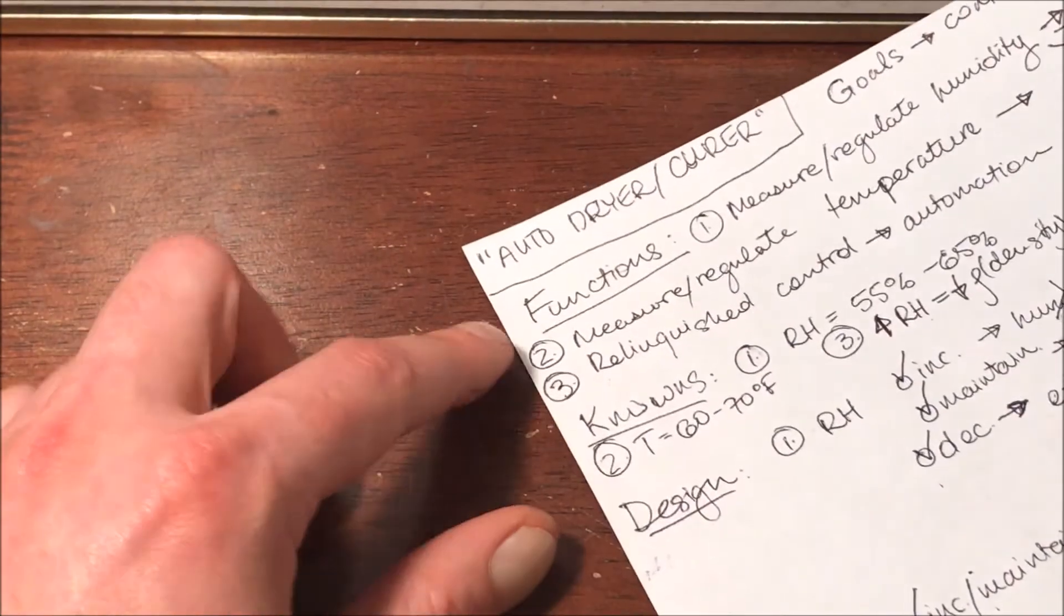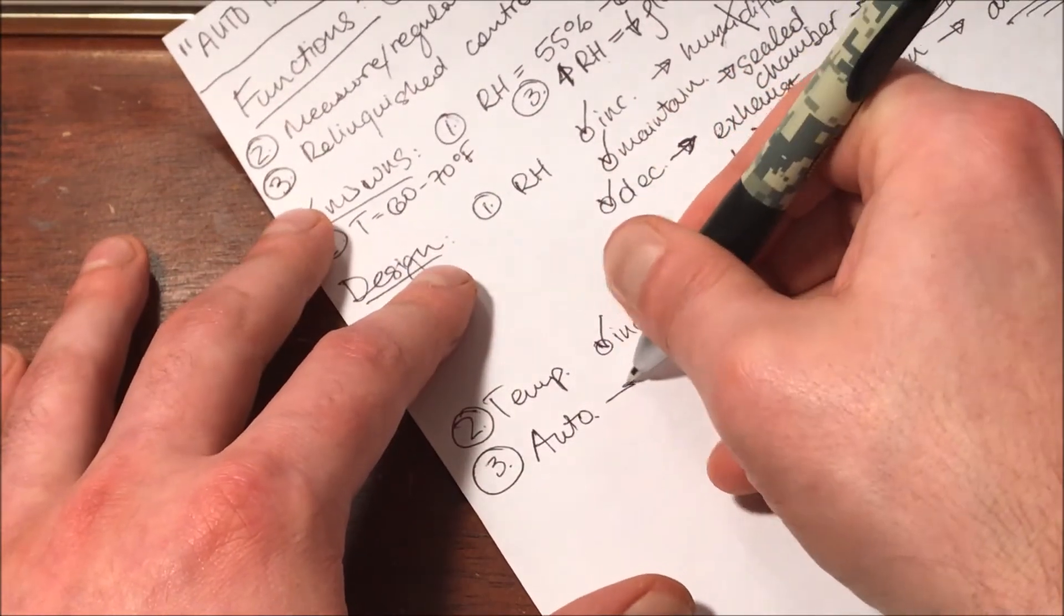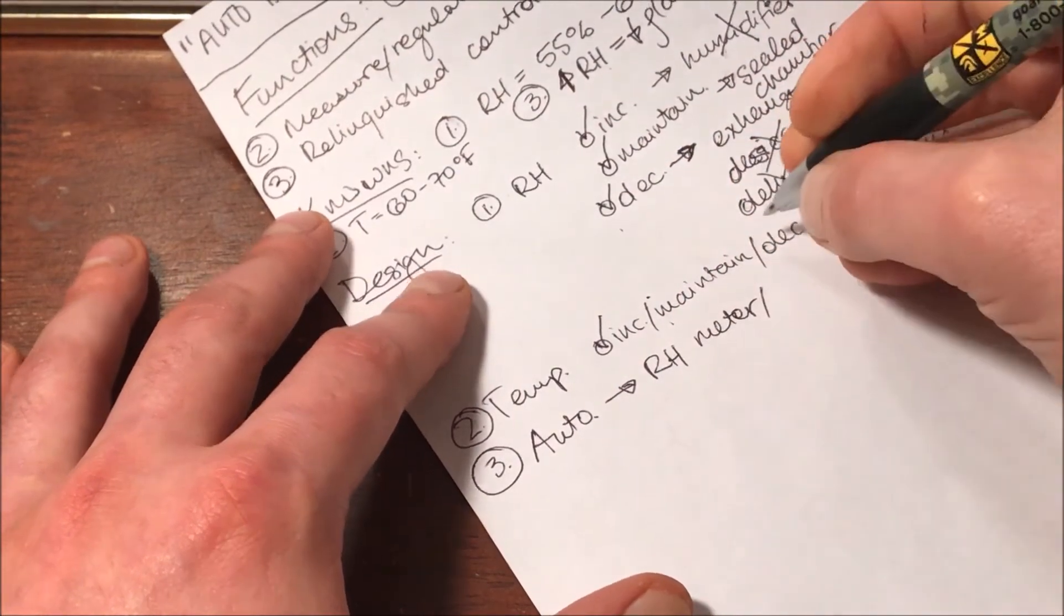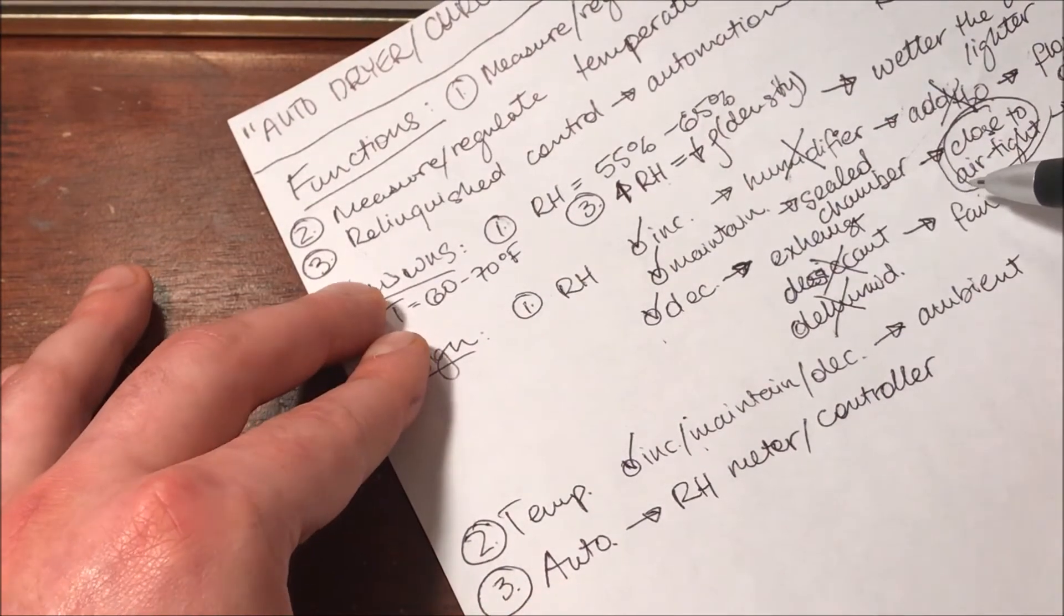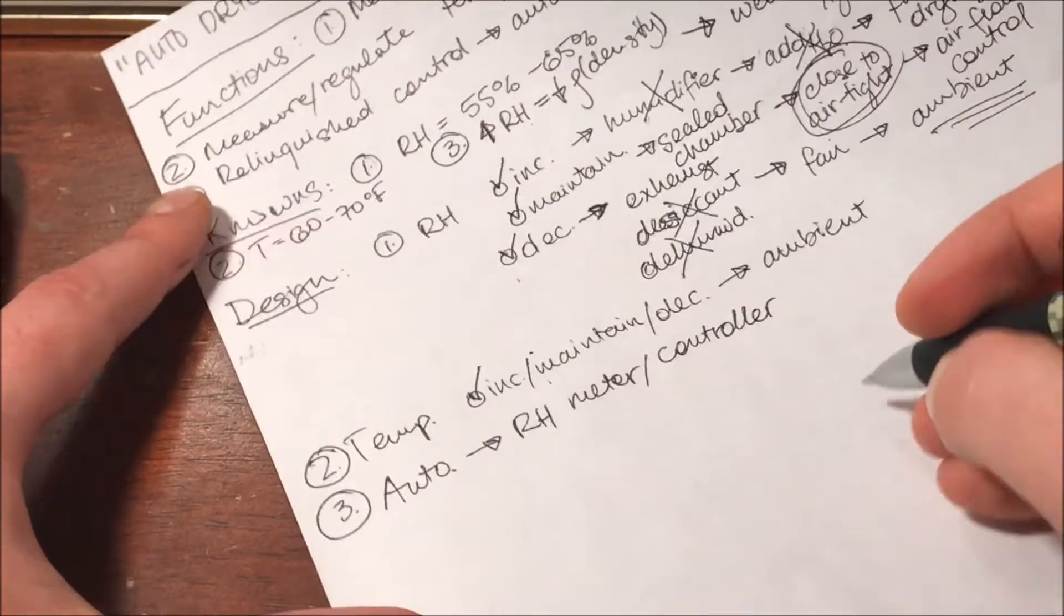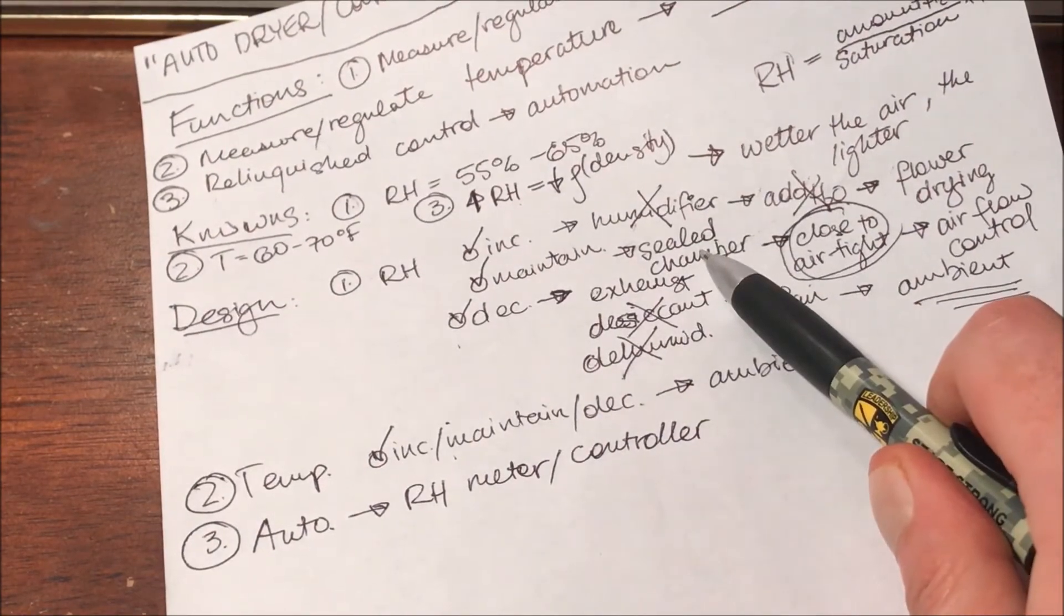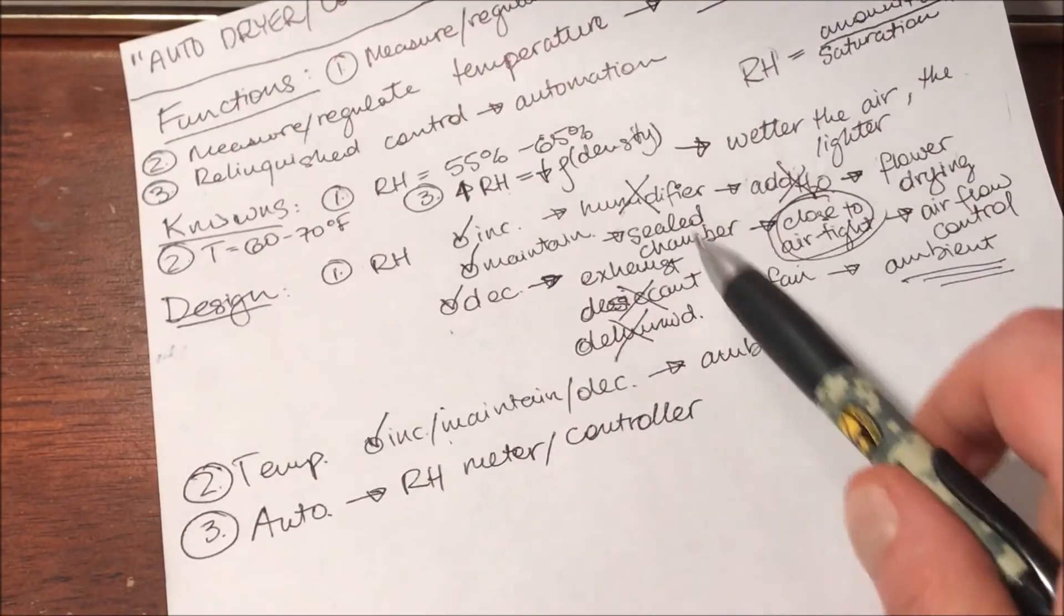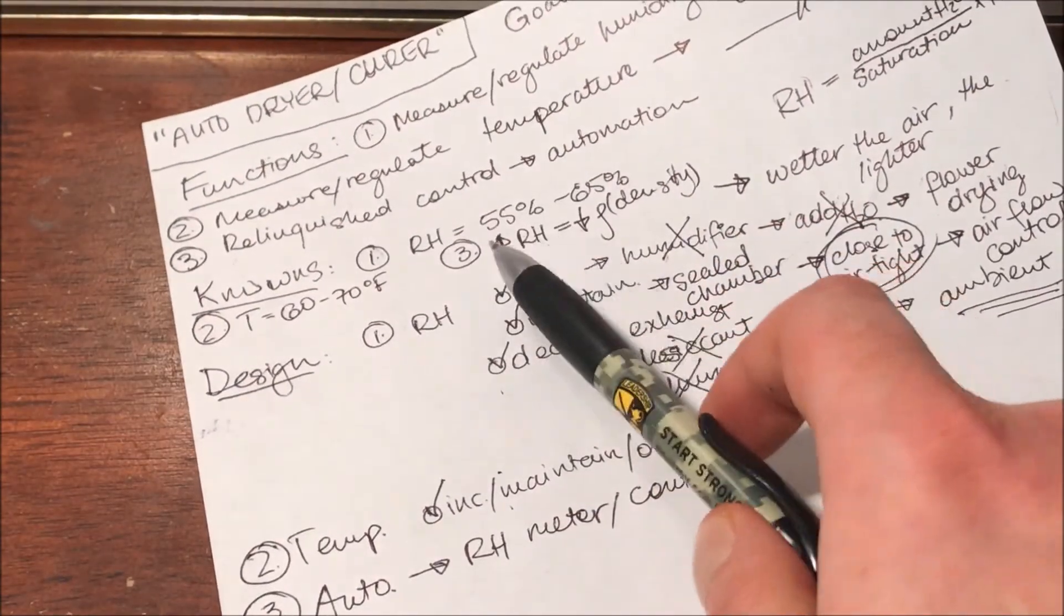And finally, our third function was some automation. And that's going to be the most important part, really. And I'm going to do that using a humidity meter, so sensor, with a controller to functionalize the exhaust fan. And that's it. There's basically only three parts to this. A sealed chamber, flower for drying obviously, and an exhaust fan with a controller to maintain the relative humidity in the range you want.